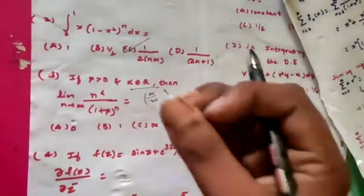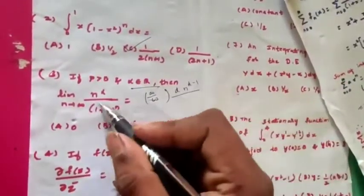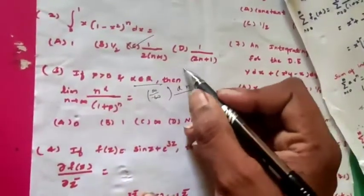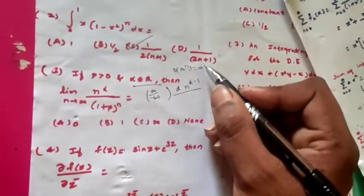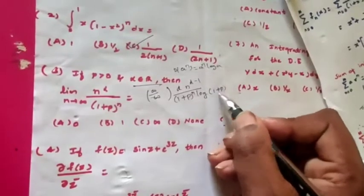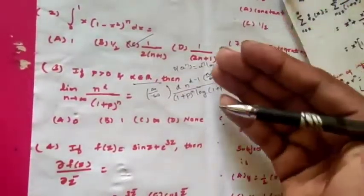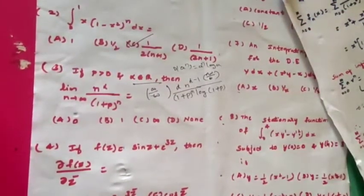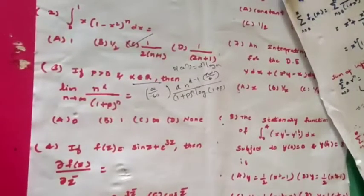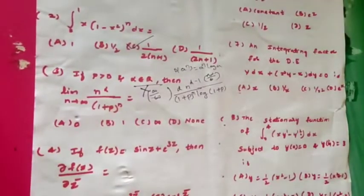After applying the limit we get an infinity/infinity form, so we might apply L'Hôpital's rule. Differentiating n^α gives α·n^(α-1), and differentiating (1+p)^n gives (1+p)^n · log(1+p). Applying the limit again we still get infinity/infinity. This process goes on and we won't get the correct answer — we'd be wasting time. This is not the right approach for this question.